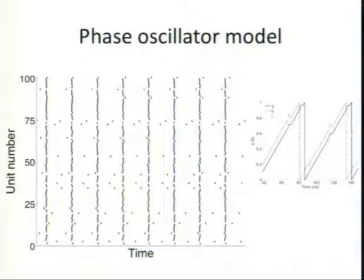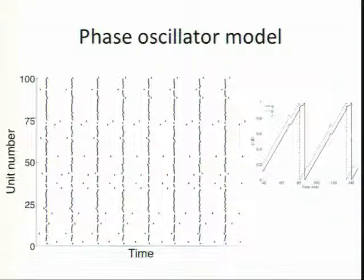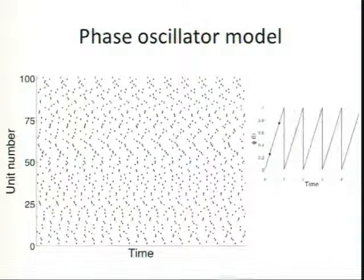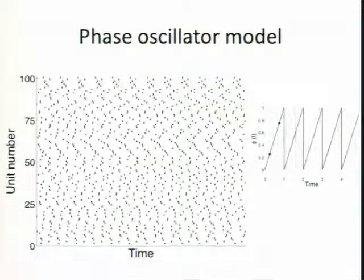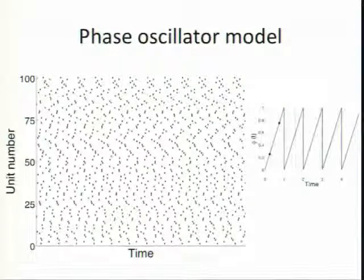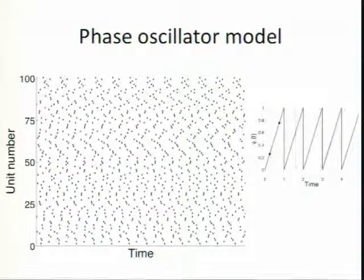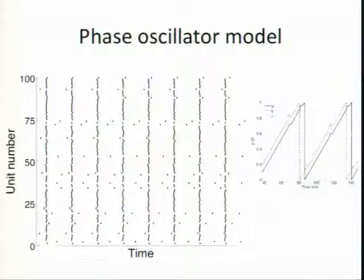And so depending on how you describe f, what the coupling is between these oscillators, you can start to get really interesting behaviors out of the system. So this is a totally synchronous system. I'll just contrast that with this, when there's no coupling, no interesting behavior, just kind of looks like totally predictable spike times. Then when you throw in some coupling, the system is synchronized.